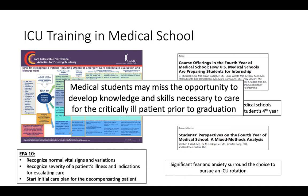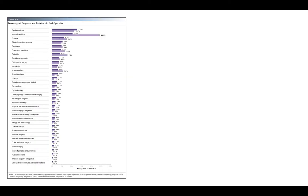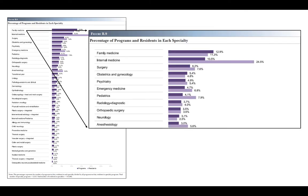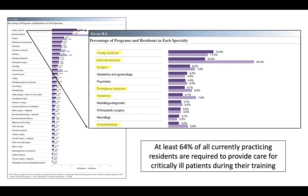How important are those skills in residency? This graph released by the ACGME for the 2018-2019 academic year shows the percentage of residents training in each specialty. Looking at the most common specialties, the six largest — internal medicine, family medicine, pediatrics, general surgery, emergency medicine, and anesthesiology — all require residents to provide care for critically ill patients during their training. Overall, between these six groups, at least 64% of all currently practicing residents will care for critically ill patients.